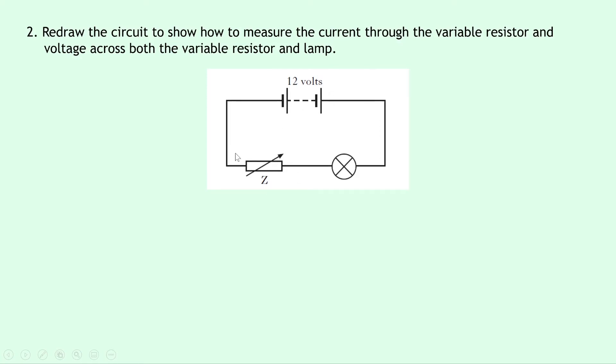We need to show how to measure the current through this variable resistor and the voltage across the variable resistor and the voltage across the lamp. So we need one ammeter and two voltmeters in this circuit when we redraw it. If I was to redraw this, I would have the ammeter in series with the variable resistor there to measure the current passing through it.